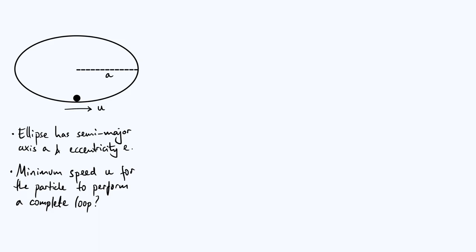I've aligned my ellipse so that the major axis is horizontal, and I've marked on my semi-major axis A. That's going to be one of the parameters that defines our ellipse. The other parameter that defines the ellipse is the eccentricity E. The eccentricity E is a parameter that goes from 0 to 1, which tells you basically how non-circular your ellipse is.